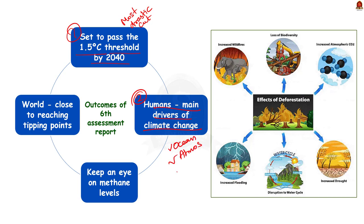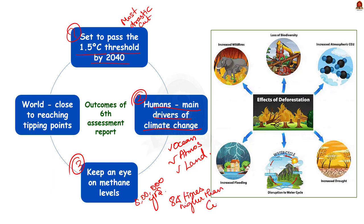The report said that humans are the main drivers of climate change and have successfully warmed the atmosphere, ocean, and land. Thirdly, the report said that methane levels are at their highest for 800,000 years and will have a global warming impact 84 times higher than carbon dioxide over a 20-year period. Methane emissions are largely caused by agricultural farming, oil and gas operations, and abandoned coal mines. Since methane is becoming equally tough to limit, we need to keep an eye on methane levels as well.